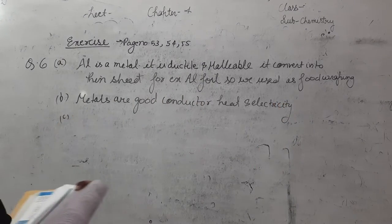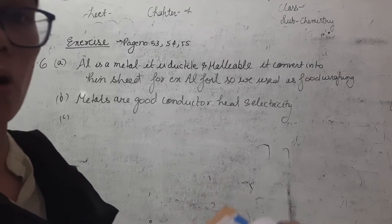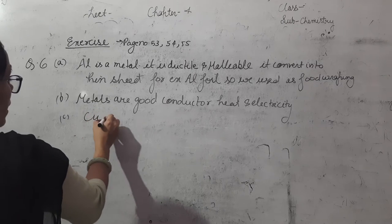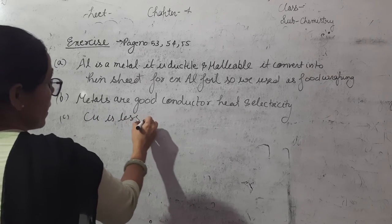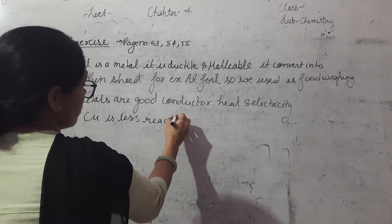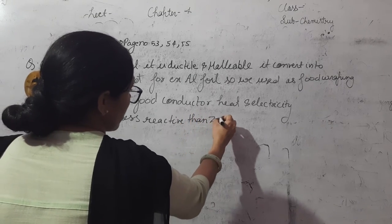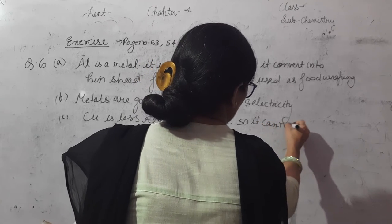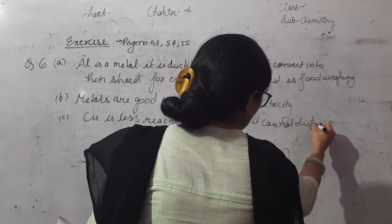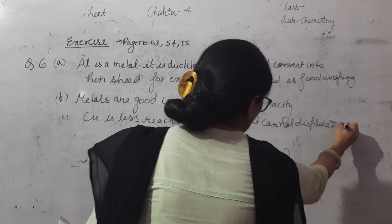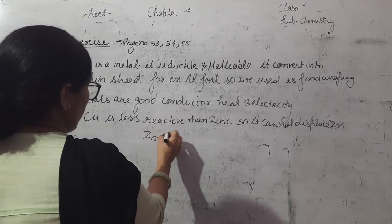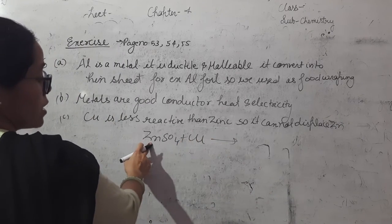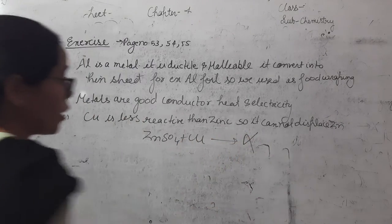Third is copper cannot displace zinc from its salt solution. Copper is less reactive than zinc, so it cannot displace zinc. Reaction is zinc sulfate plus copper. Copper is less reactive metal, it cannot displace zinc, so the reaction is not possible.